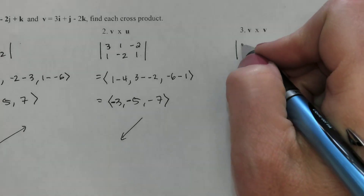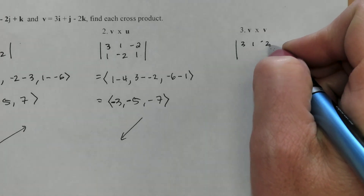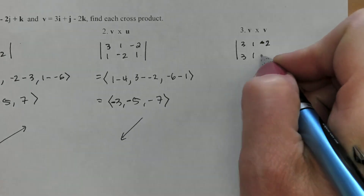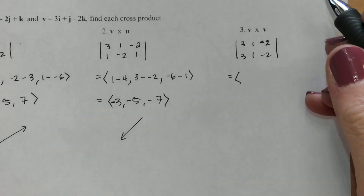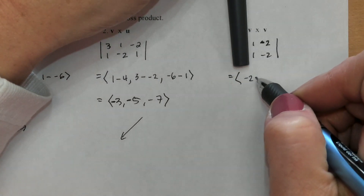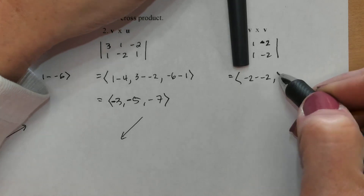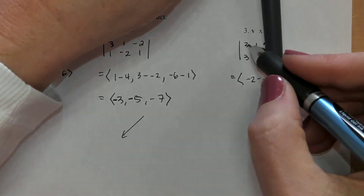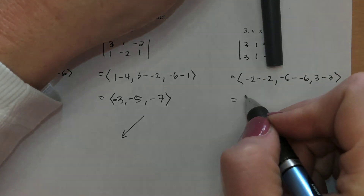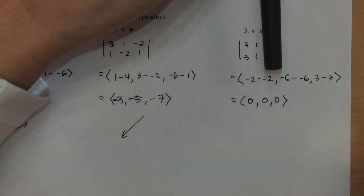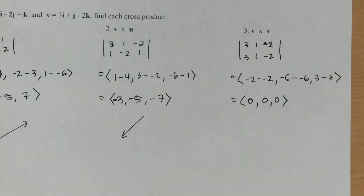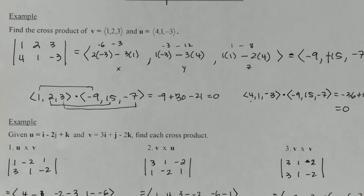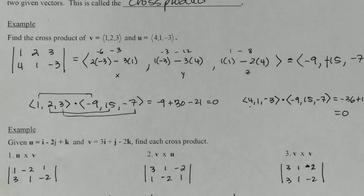When you cross a vector with itself — take (3, 1, -2) crossed with (3, 1, -2) — covering up the first column I'll get negative two minus negative two; then negative six minus negative six; and three minus three. So when you cross a vector with itself, you get the zero vector. That's cross product — not really a whole lot of pre-calculus level math, really just multiplying and subtracting. But there's a lot to keep track of, and it's very easy to lose your negative signs, so keep an eye on those.